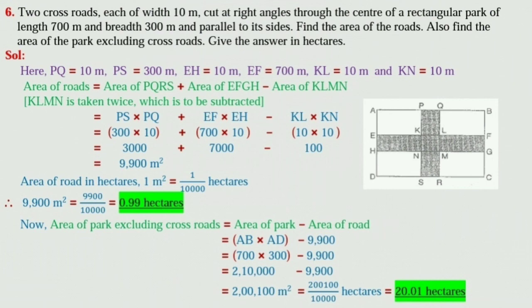Now, area of roads is equal to area of PQRS plus area of EFGH minus area of KLMN. Here KLMN is taken twice which is to be subtracted. So, equal to PS into PQ plus EF into EH minus KL into KN.